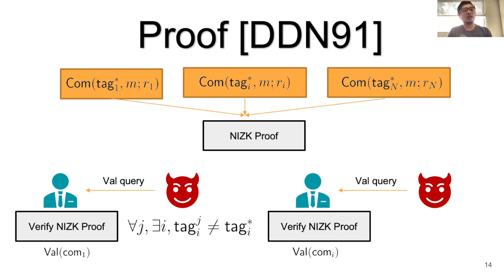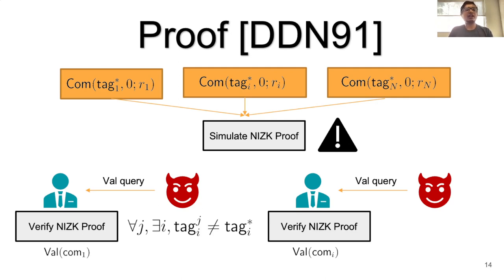However, this proof technique does not work in our setting because NIZKs require setup like a common random string. In our non-interactive, non-malleable setting, we cannot have setup beforehand and need a non-interactive algorithm. So we replace NIZKs with something we call equivocal commitments.